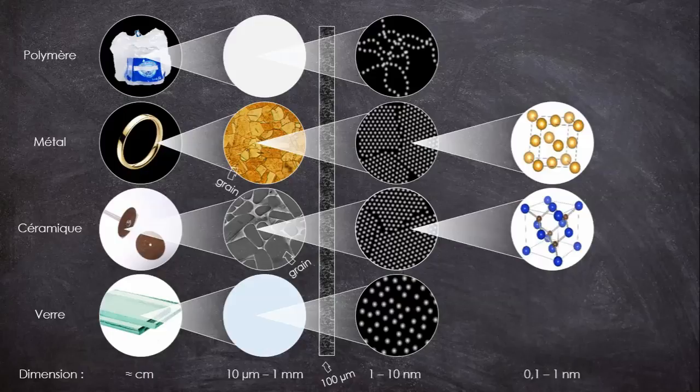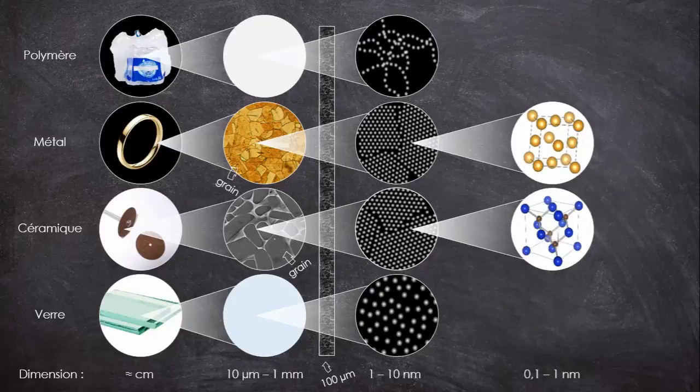Donc, un grain dans l'or, c'est un monocrystal d'or, où les atomes se sont disposés de façon régulière. Et quand il y a plusieurs monocrystaux dans un matériau, on dit qu'il est polycrystallin. Il arrive d'avoir des monocrystaux de grande taille, c'est typiquement ce qu'on a dans la joaillerie.